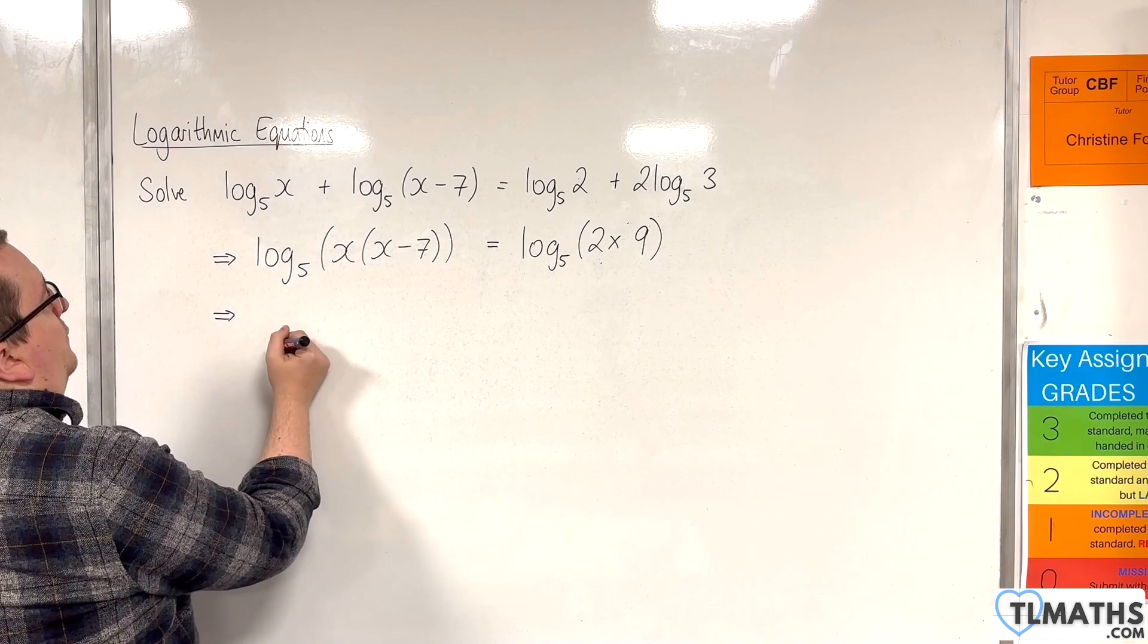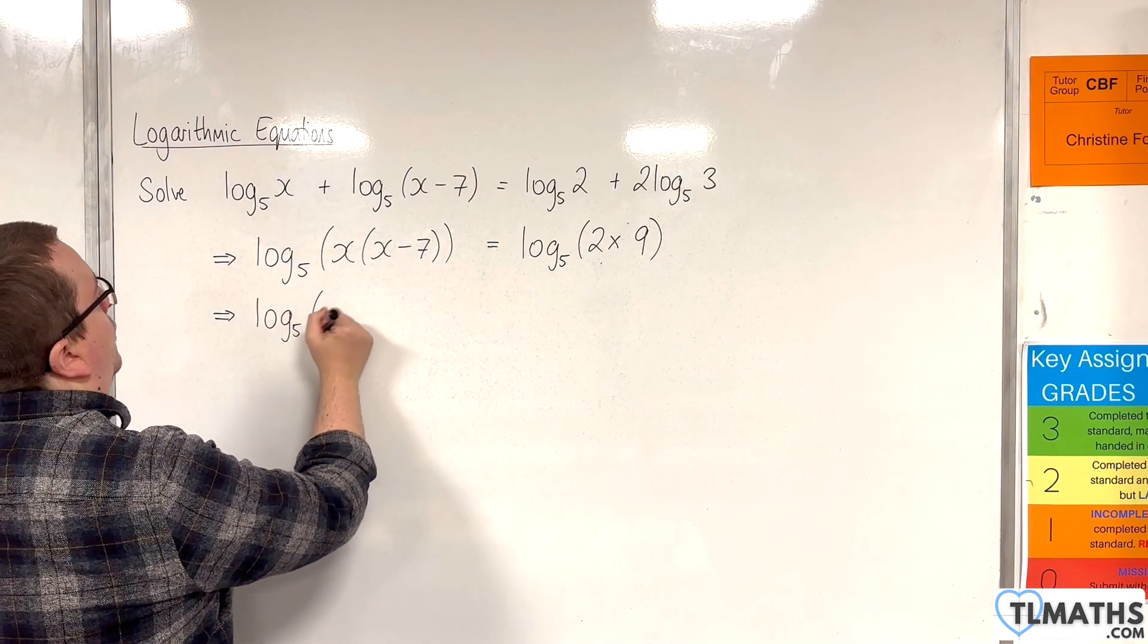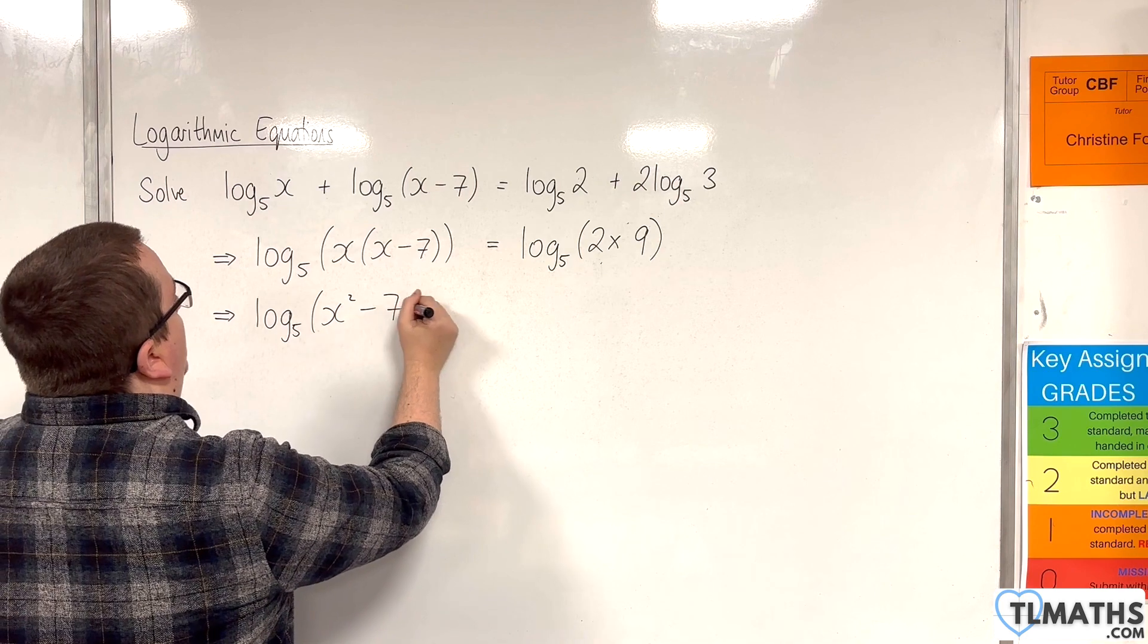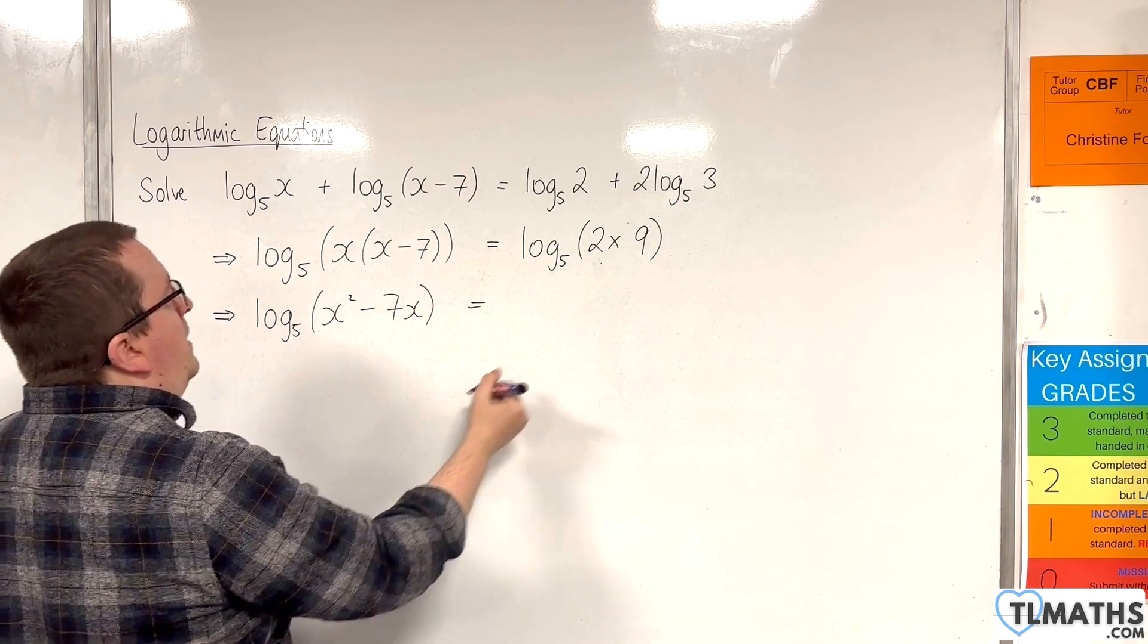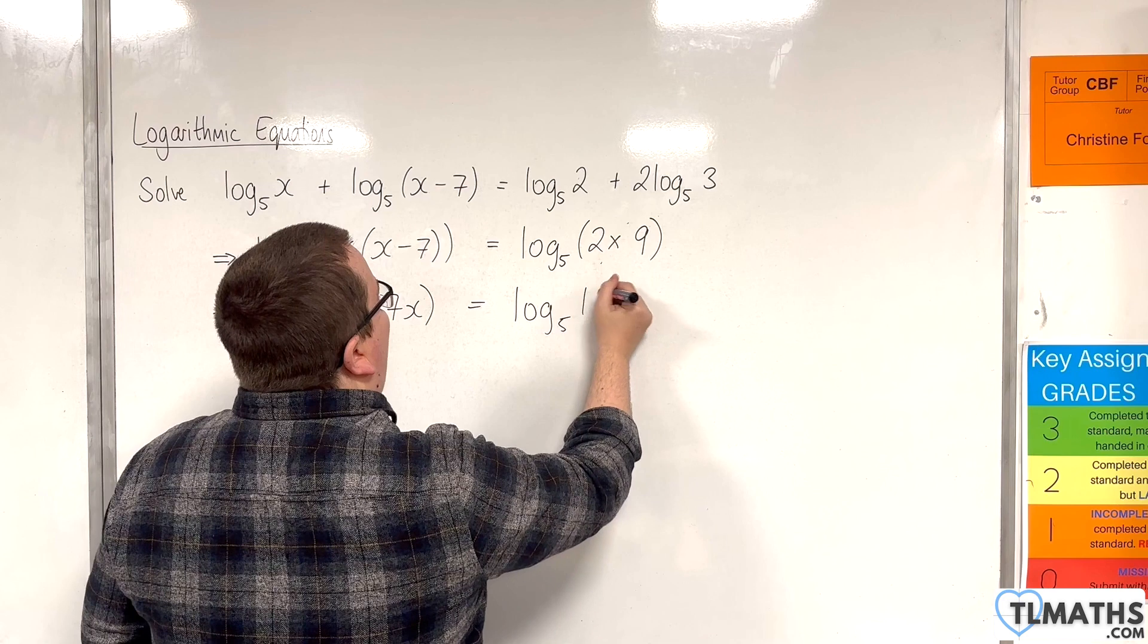So we have on the left hand side log base 5 of (x² - 7x) and on the right hand side we have log base 5 of 18.